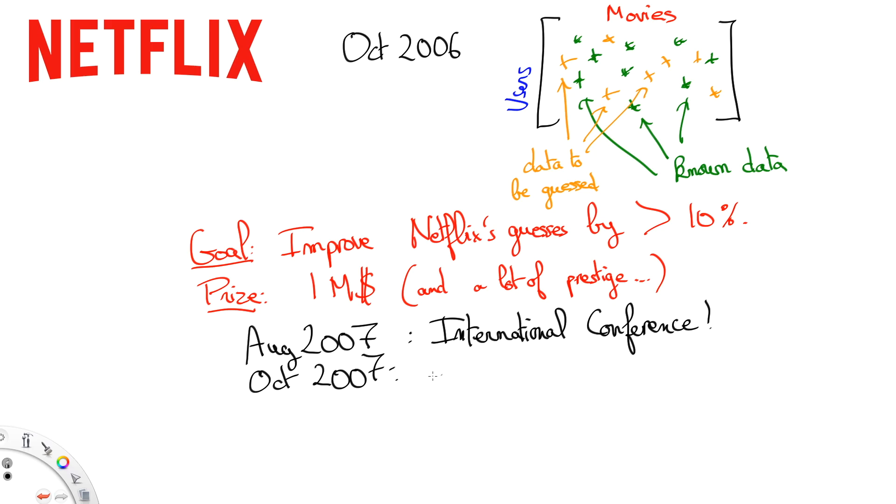The Bellcore team took the lead in late 2007 and won the 50,000 first-year prize in November 2007 with an 8.43% improvement on Netflix's algorithm. Almost a year later,